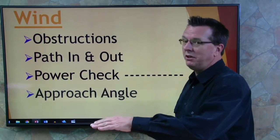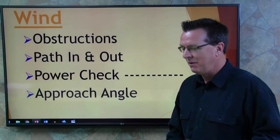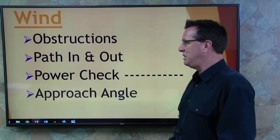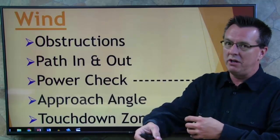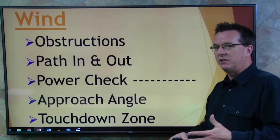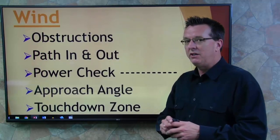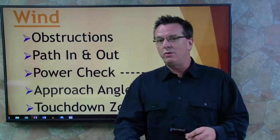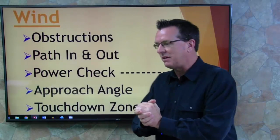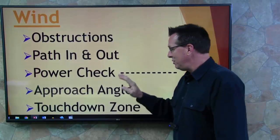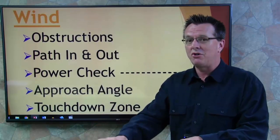Approach angle — hopefully you can do a normal approach in there, but most likely not. Most of the time when you're doing an off-airport or confined area landing, it turns into a steep approach. And then your touchdown zone — are you going to land in the middle of your spot, or toward the other end? I trained with some Vietnam pilots and learned a lot of really good stuff from those guys.